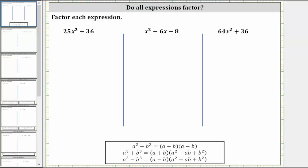At this point, we might recognize that 25x squared and 36 are both perfect squares. If it's helpful, we can write 25x squared as the square of 5x, and we can write 36 as the square of six. So we do have a sum of squares, but remember, only a difference of squares is factorable, as shown by this formula here.